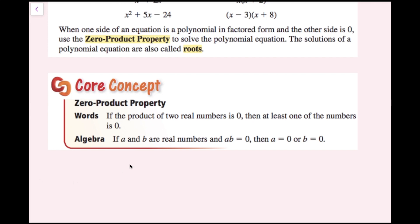In algebra, if a and b are real numbers and a times b equals zero, then a equals zero or b equals zero. At least one of these has to be zero. So we can either do zero times zero, zero times b, or a times zero — any of that would make that equation true.